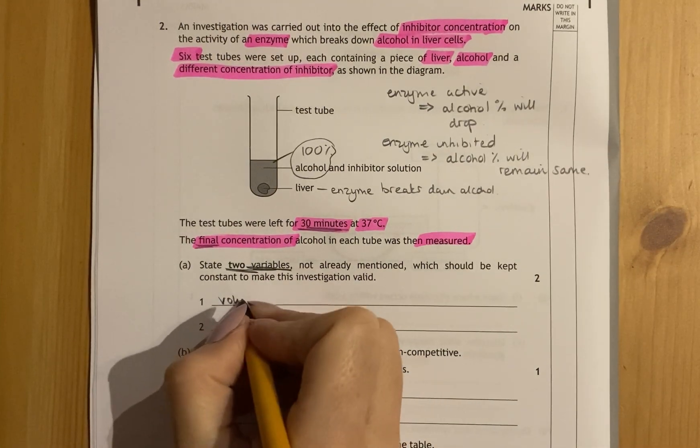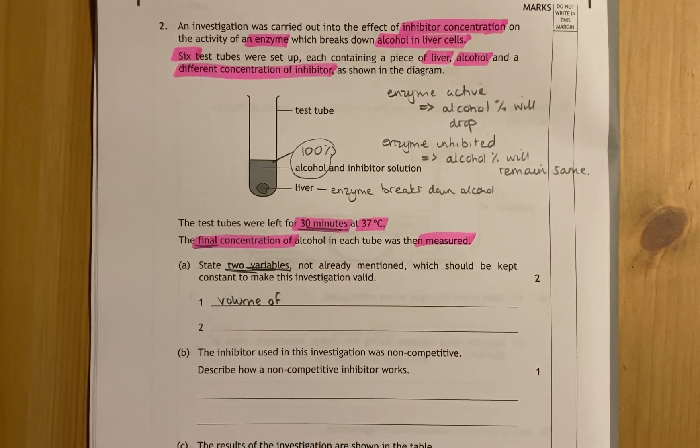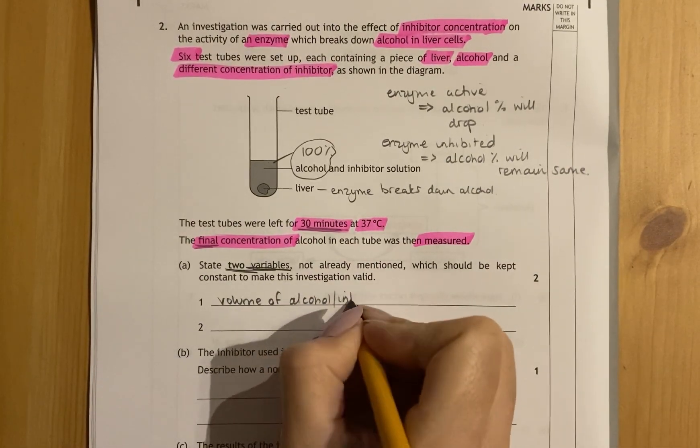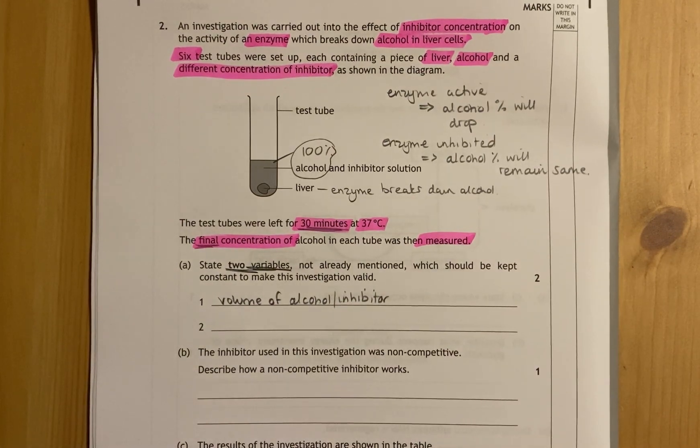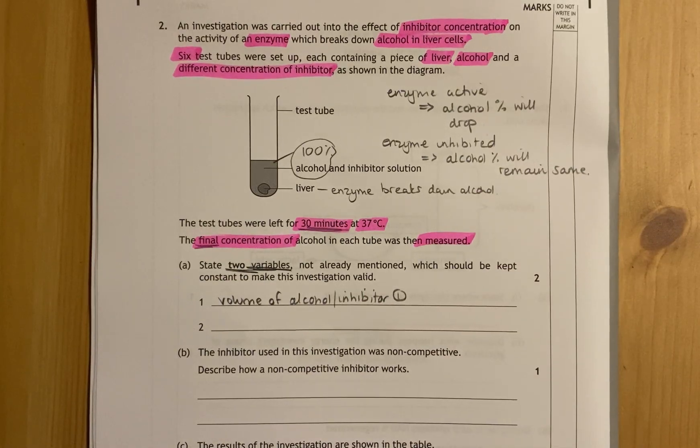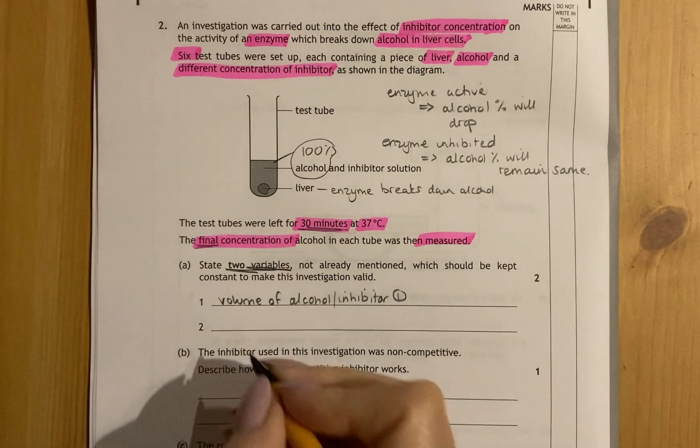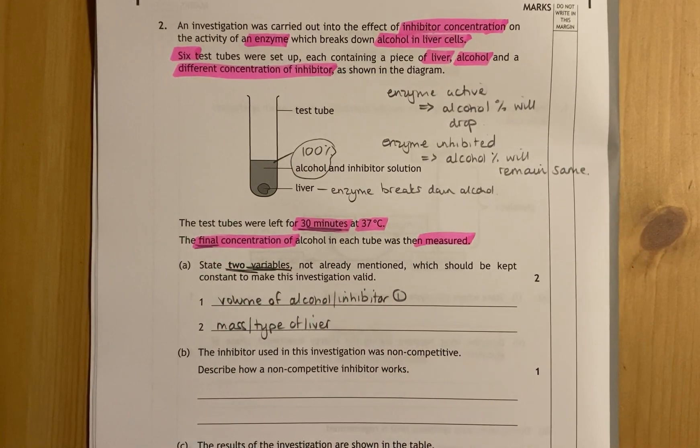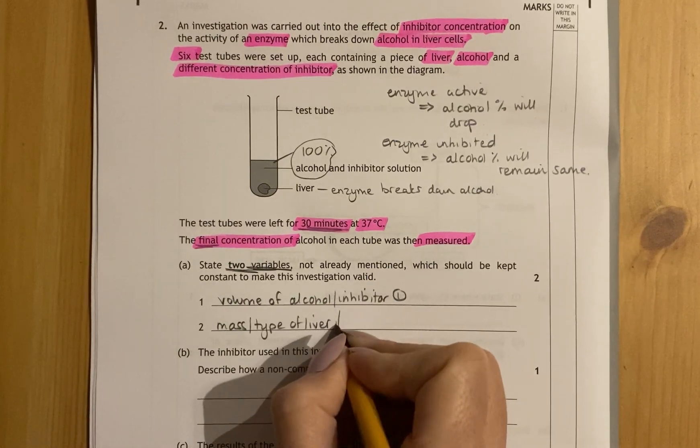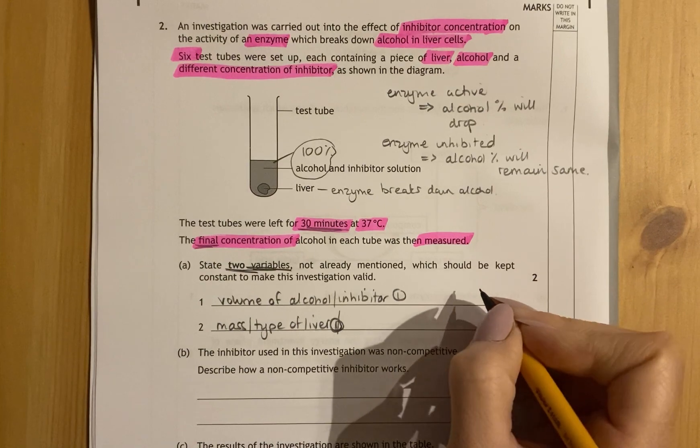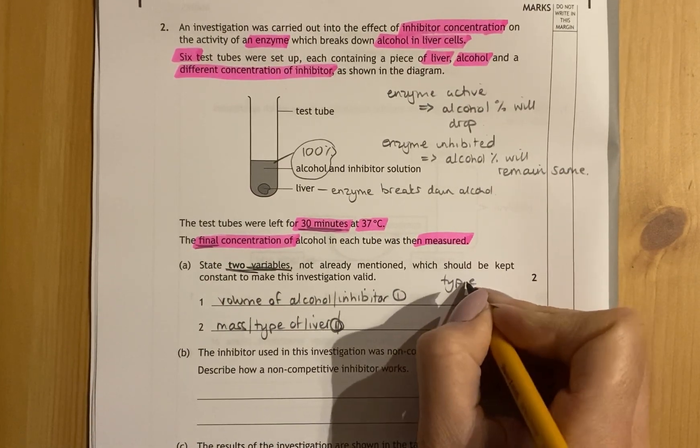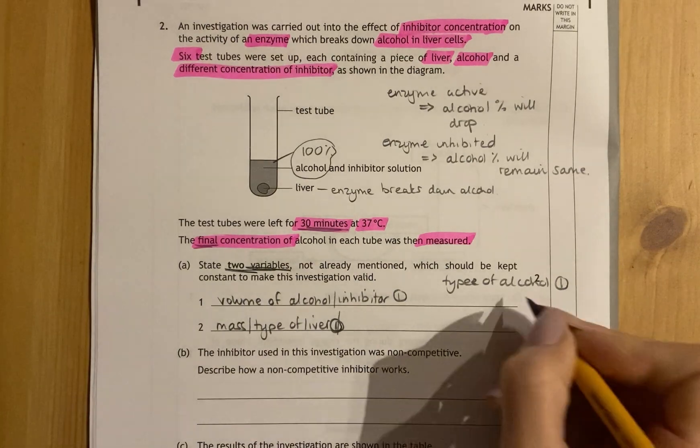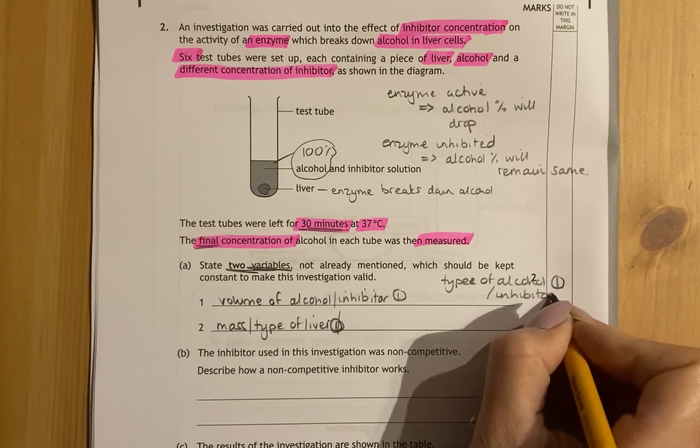So what haven't they said? Well first of all they've not said volumes. They've not said the volume of the alcohol or the volume of the inhibitor. So both of those you could include as one mark. They've not talked about the liver at any point at all, so mass or type of liver would have to be kept constant, otherwise that wouldn't be a fair and a valid experiment. They've not talked about the type of alcohol, so different types of alcohol might cause a different effect. They've not also said about type of inhibitor, so that could be another mark.